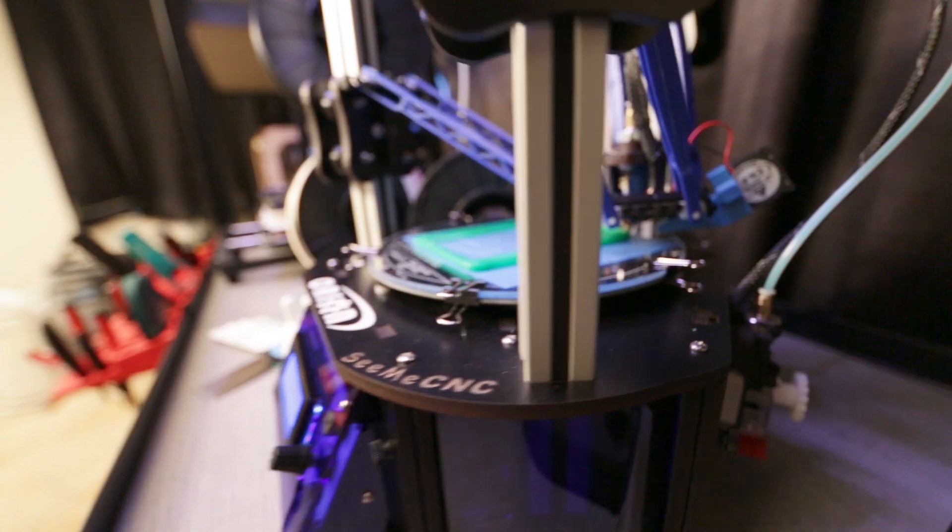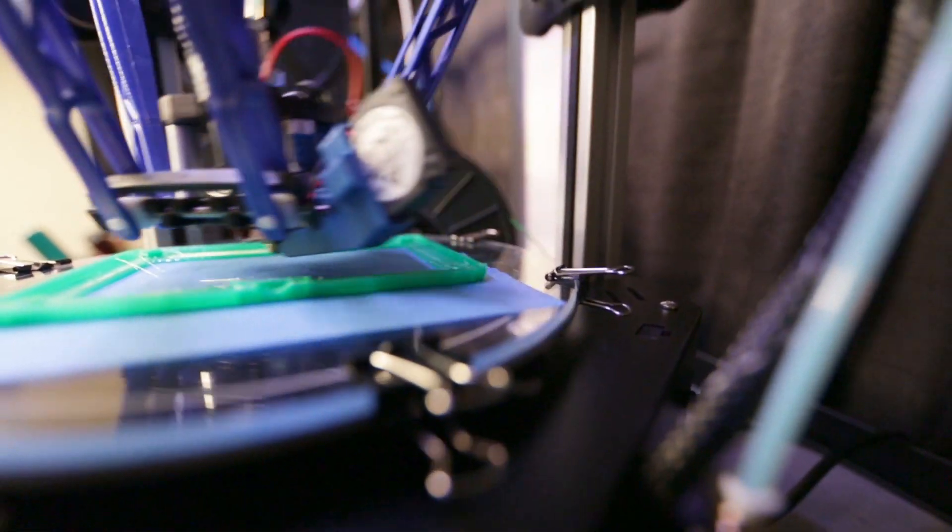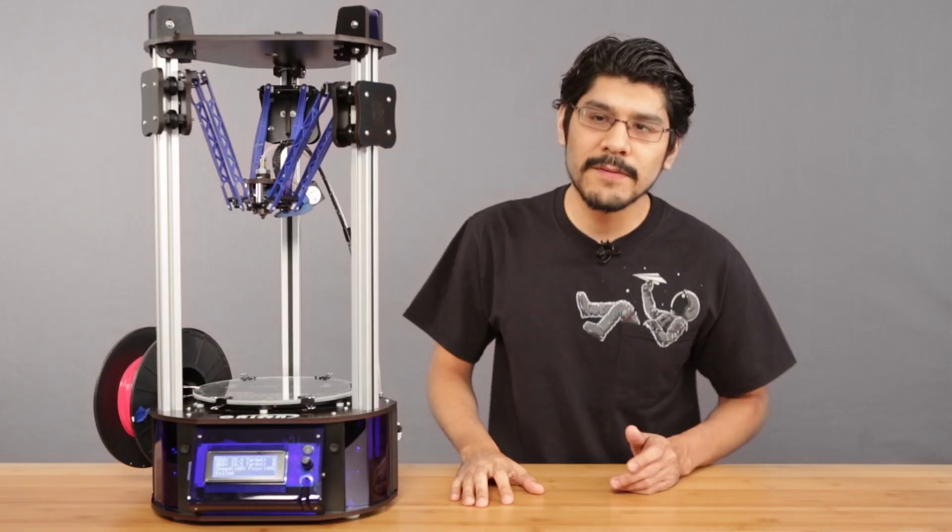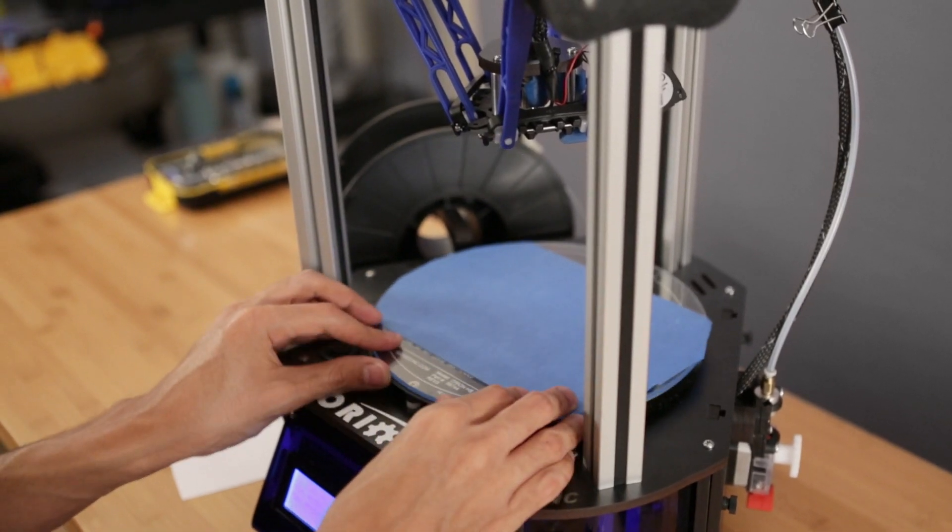This is a Delta style 3D printer that features a heated bed for printing in ABS, nylon and of course PLA material. It's got a pretty big build volume of 150 millimeters and a removable glass plate so it's easy to remove parts.